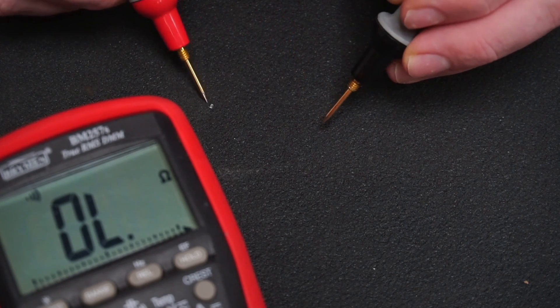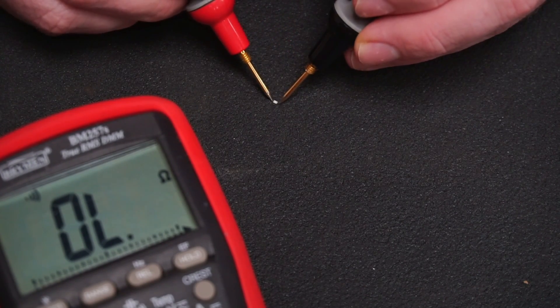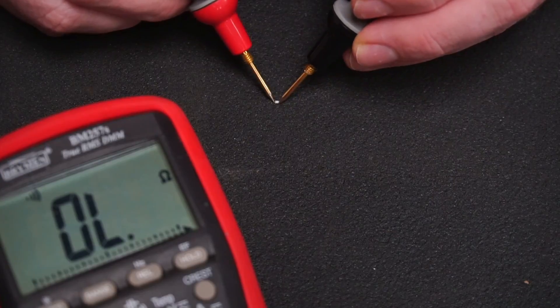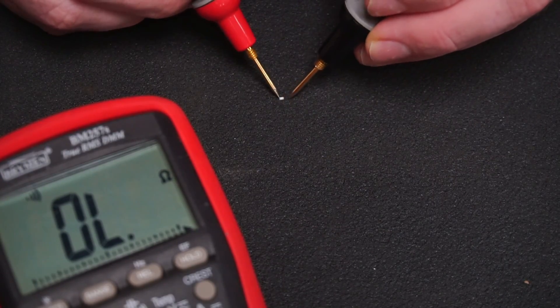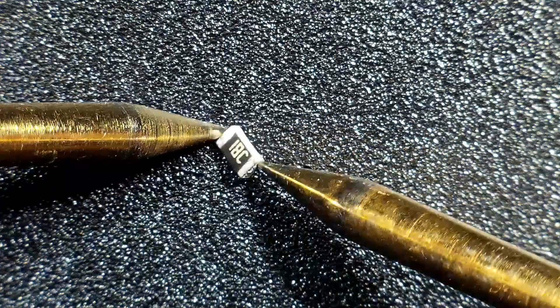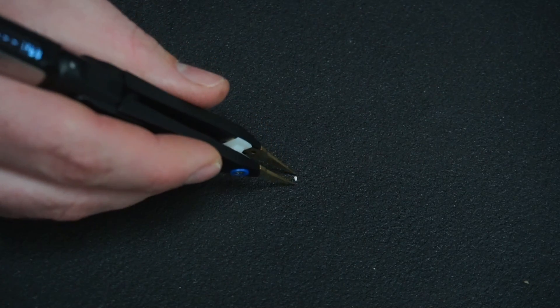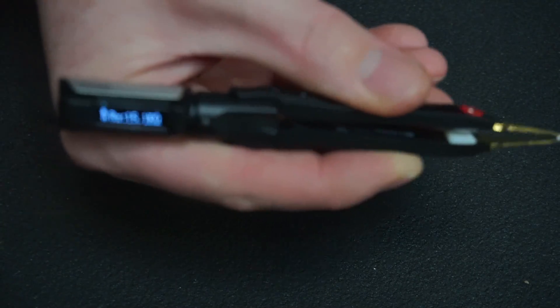Measuring these tiny SMDs with a traditional multimeter and probes can be quite frustrating. This is where the DT-71 excels at picking up and testing these tiny components.